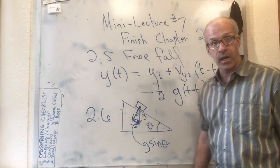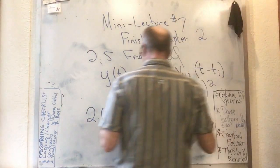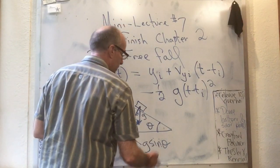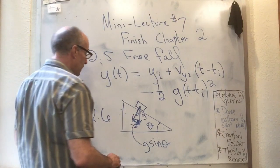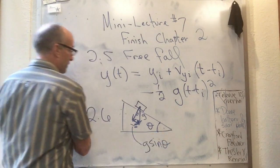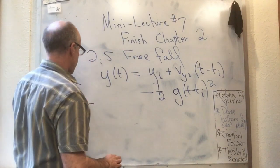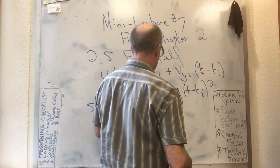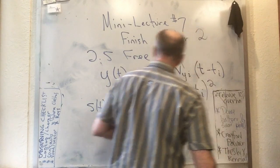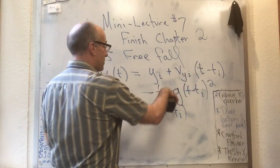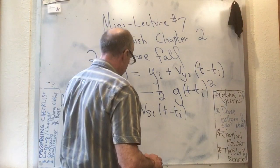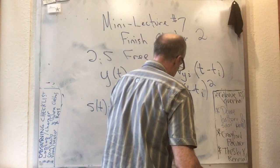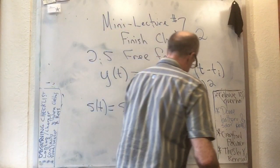Motion on an inclined plane is now a solved problem. The acceleration down the plane is g sine theta — not a full g, not zero, but something in between. Plugging that in: s(t) equals s_initial plus the initial velocity times the elapsed time, plus one-half g sine(theta) times (t minus t_i) squared.